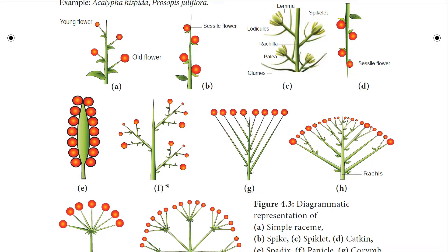The next type of racemose inflorescence is panicle, in which the main axis is longer. A branched raceme is called panicle — the main inflorescence axis branches in acropetal succession, and each branch acts as an inflorescence to the main axis. It can also be called compound raceme or raceme of racemes. Example: Mangifera indica and neem.